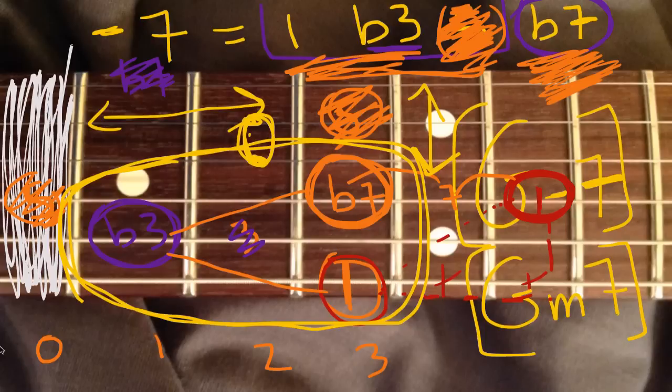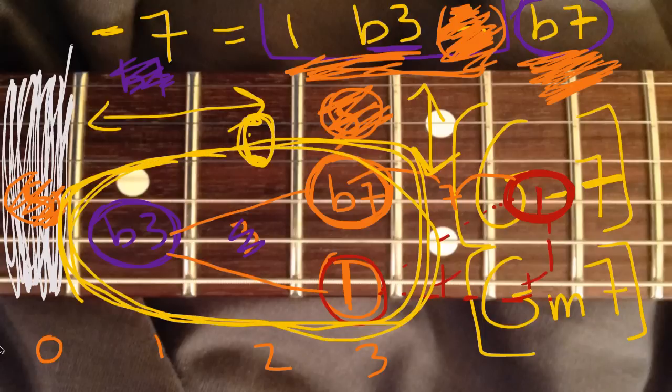But you could take this minor seven shape, the one flat three flat seven, and you can move it left to right as much as you want. And it's one of the more common ways. People also use this all the time starting on the fifth string. So they would move that minor seven shape around on the A, D, and G strings. But you can't move it up to there because it would become a different chord and it wouldn't sound right.